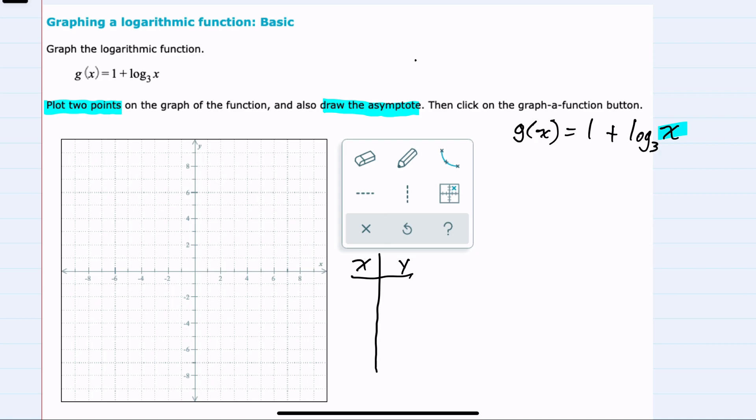And remember, this log is asking 3 raised to what power will be x? So one friendly number that I can substitute in is 1, because the log base 3 of 1 says 3 raised to what power would be 1? And since 3 to the 0 power is 1, this would simplify to 1 plus 0, or just 1. So our first coordinate is the point 1, 1.